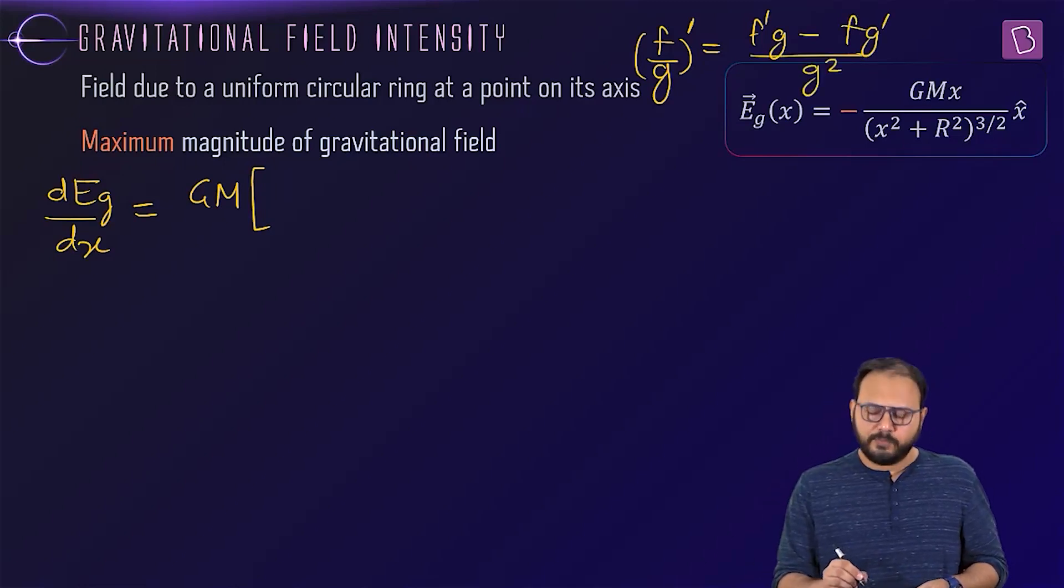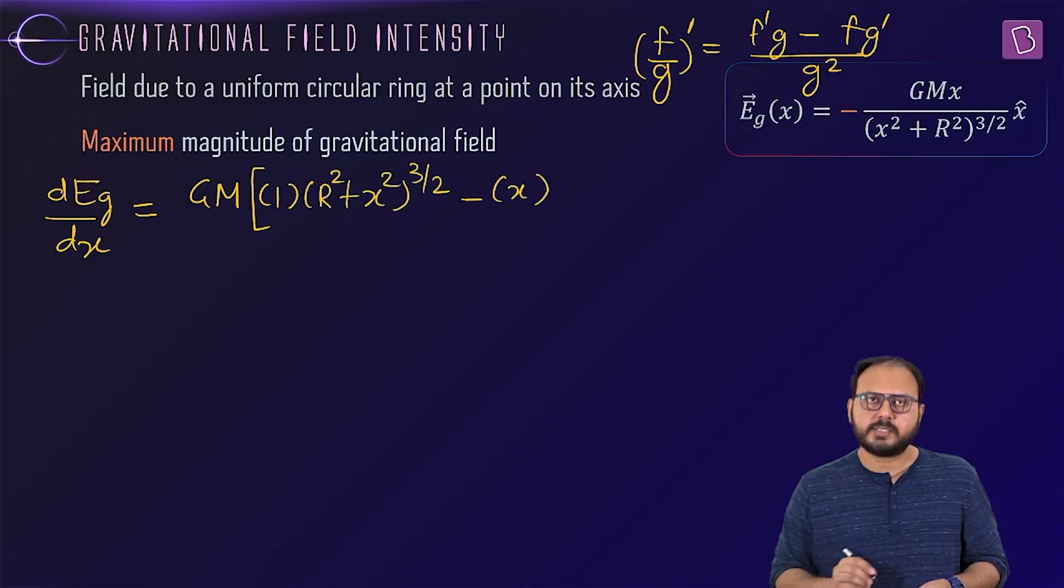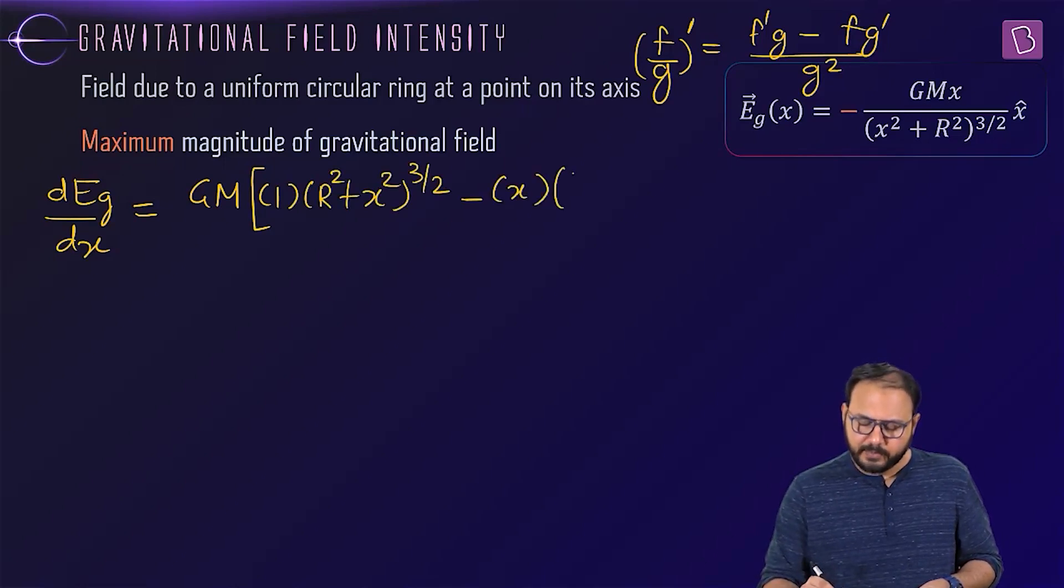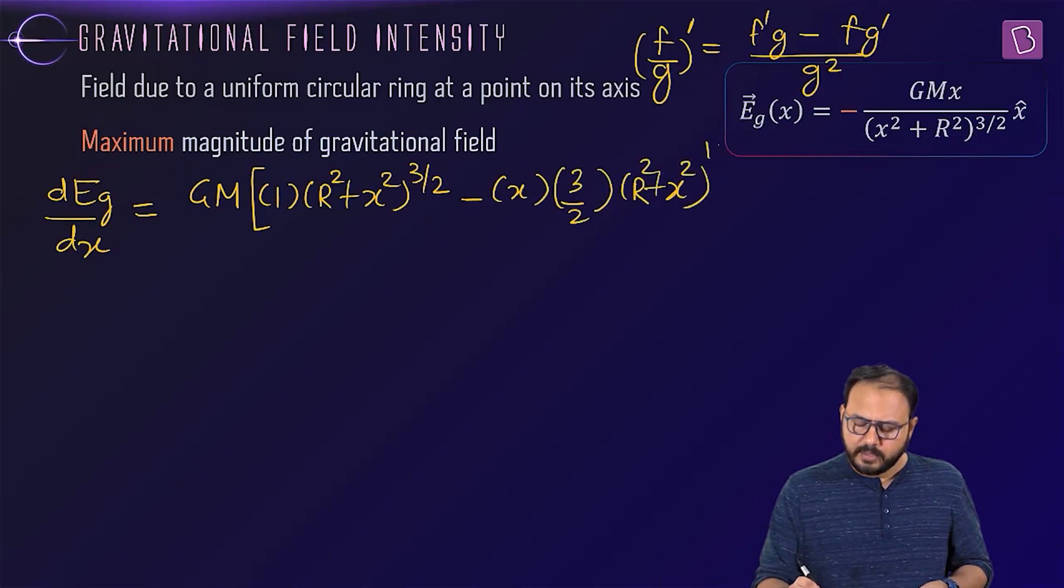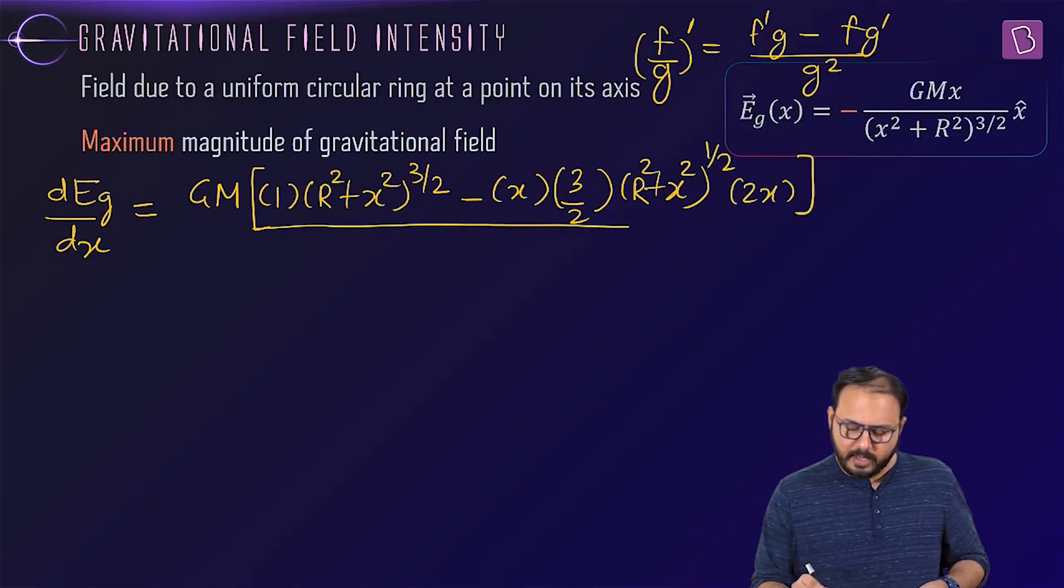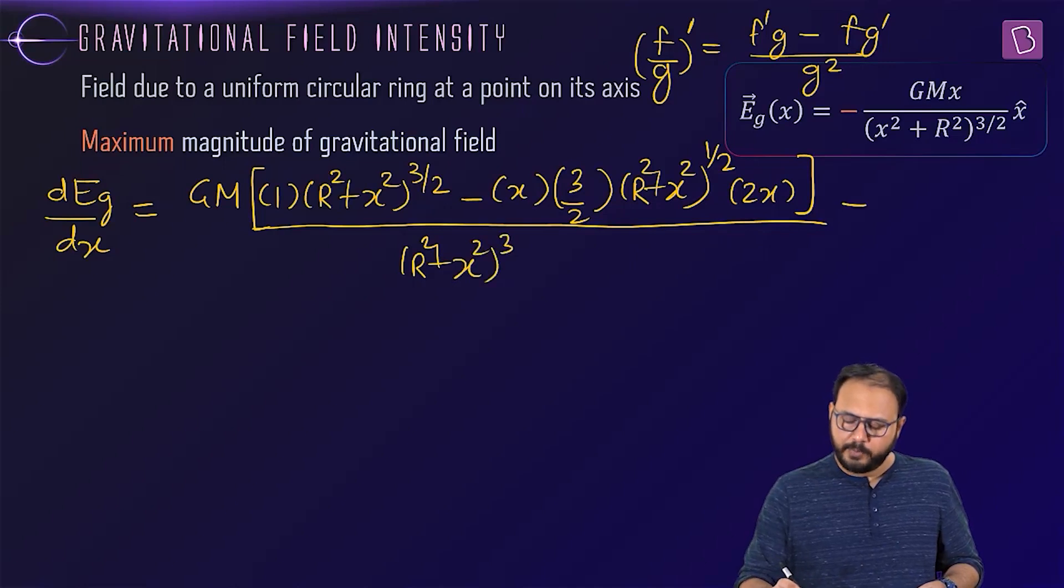Quotient rule says f upon g prime. f upon g whole prime is f prime times g minus f g prime upon g square. Is it or not? Right, sir. So first is who's playing f? Only x. One. g prime. r square plus x square 3 by 2. Minus. f. x. g prime. 3 by 2. r square plus x square. What is 3 by 2 minus 1? Half. And then chain rule. 2x. Upon. g square. r square plus x square 3 by 2 square. So cube. And put it equal to 0.